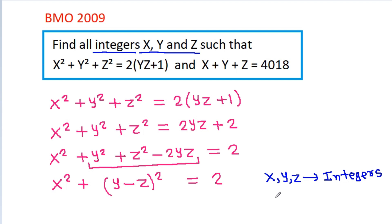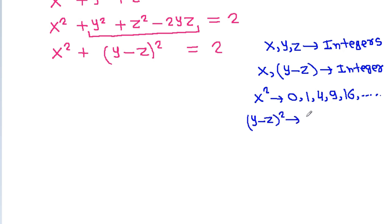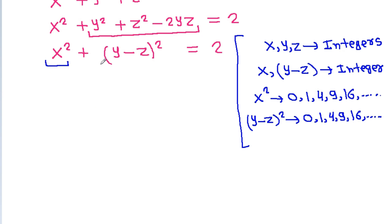So x squared can be 0, 1, 4, 9, 16, and so on, and (y - g) squared can also be 0, 1, 4, 9, 16, and so on. We have x² + (y - g)² = 2.